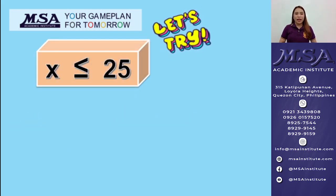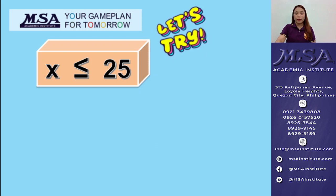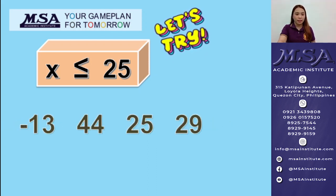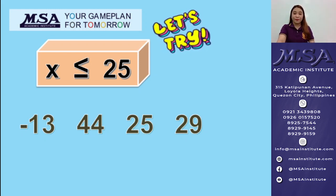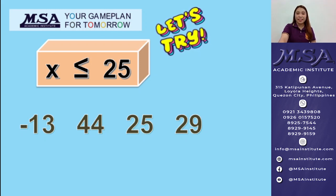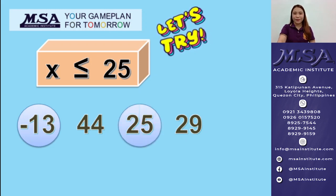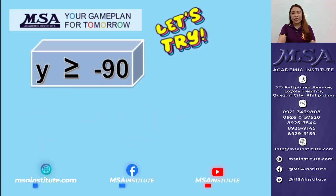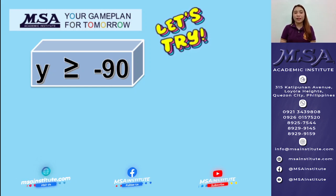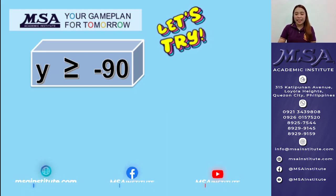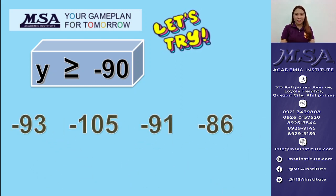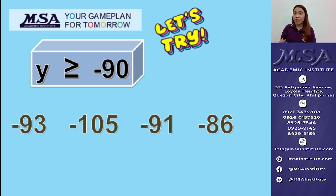Next, we have X is less than or equal to 25. Which among them is less than or equal to 25? The correct answer here is negative 13 and 25. Next, we have Y is greater than or equal to negative 90. Which among them is greater than or equal to negative 90?